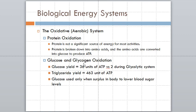Looking at ATP yield: glucose metabolized in the oxidative system — slow glycolysis — produces 36 units of ATP for one unit of sugar. In the glycolytic system with fast glycolysis, it only produces 2 units — an 18-fold difference in energy production. A triglyceride with an average-size fatty acid chain yields about 463 units of ATP for every unit of fat. We learn there are 4 calories per gram of carbohydrate and 9 calories per gram of fat — twice the energy density — but that's just heat. When looking at actual cellular fuel, it's more than a hundredfold increase in energy from fat.